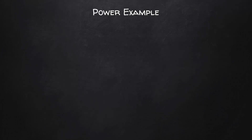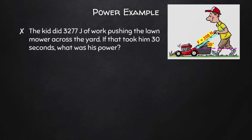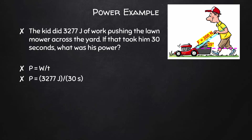Let's take a look at a power example. The kid that was mowing the lawn did 3,277 joules of work pushing the lawn mower across the yard. If that took him 30 seconds, what was his power? Power is work over time. He did 3,277 joules of work in 30 seconds, which means that his power was 109 joules per second, or 109 watts.